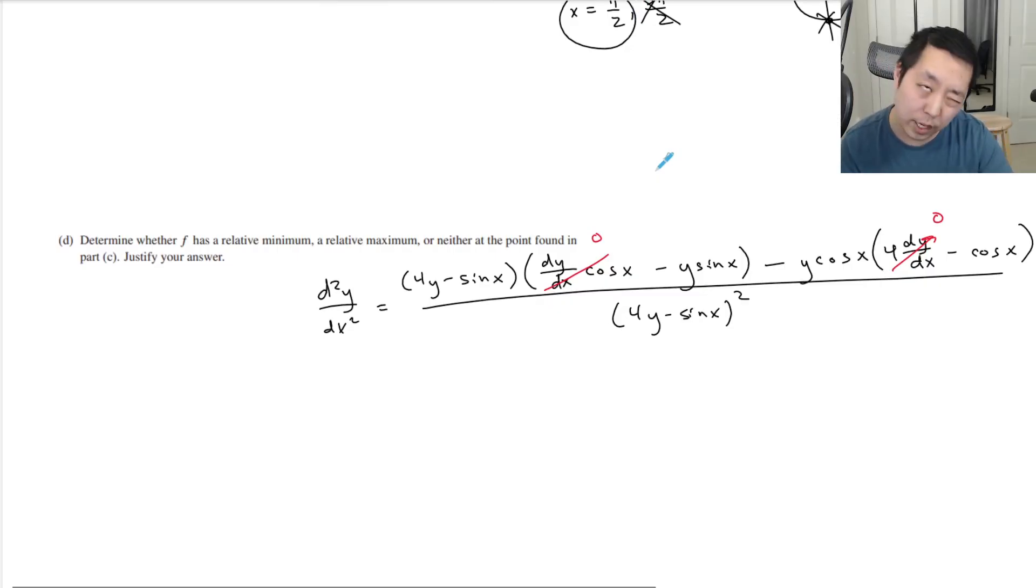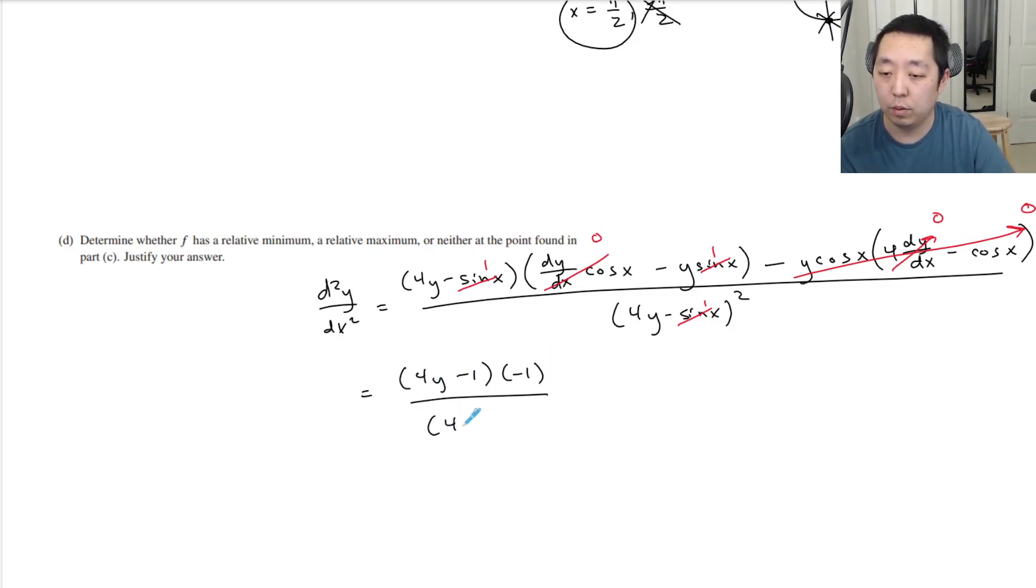X is pi over two. So I'm plugging in pi over two. Sine of pi over two is one. So that's one there. That's a one. Cosine of pi over two is zero though. So this whole thing is now zero. This thing is one. So then this becomes a lot simpler. It's four y minus one times negative one minus all of that over four y minus one squared. Let's just do a sign analysis.